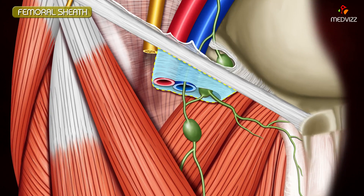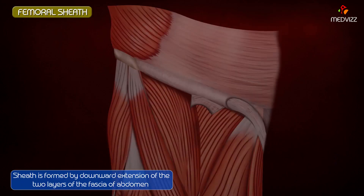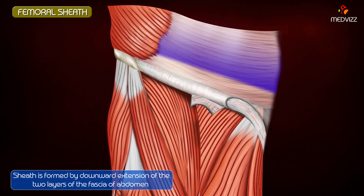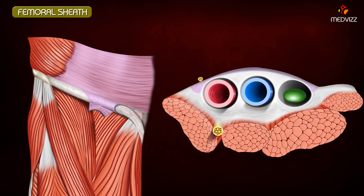The Femoral Sheath is a funnel-shaped sleeve of fascia enclosing the upper 3 to 4 cm of the femoral vessels. The sheath is formed by the downward extension of the two layers of the fascia of the abdomen.